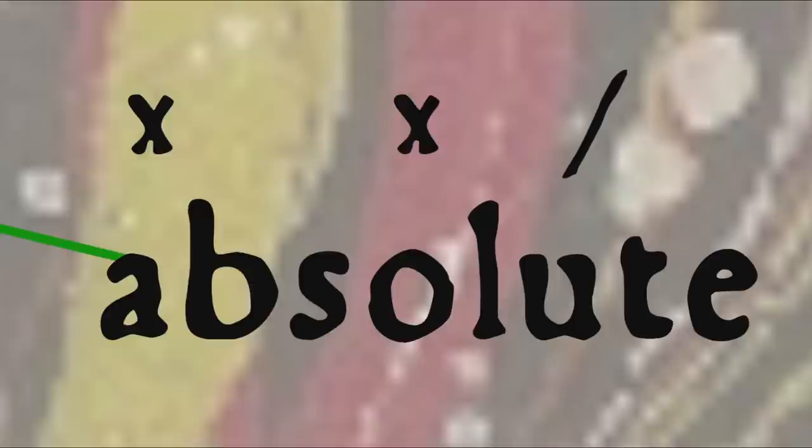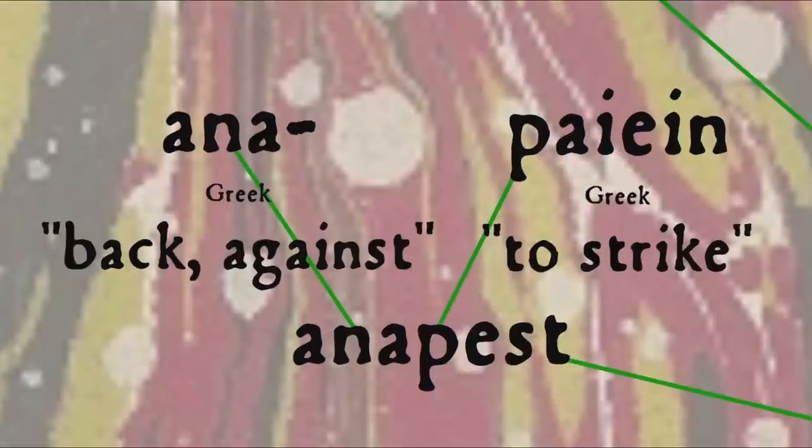The opposite of a dactyl, that is two unstressed syllables followed by a stressed syllable, as in the word absolute, is called an anapaest, literally struck back, from Greek ana, back against, and paiein, to strike, so called because it's the opposite of a dactyl.